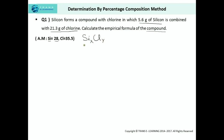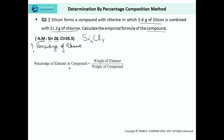The two important parameters to find the empirical formula are the atomic mass and the percentage of each element present in the compound. In this question, the percentage is missing. So first, we should know the formula: percentage of element in compound equals weight of element upon weight of compound. The weight of silicon is 5.6 grams and the weight of chlorine is 21.3 grams. The weight of the compound is the sum of these two.